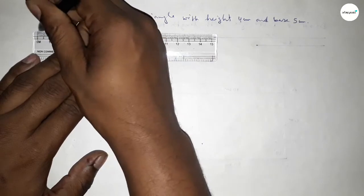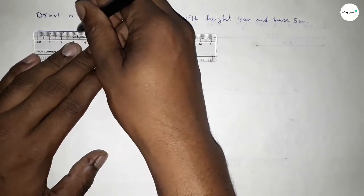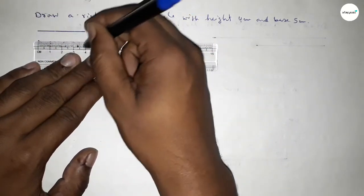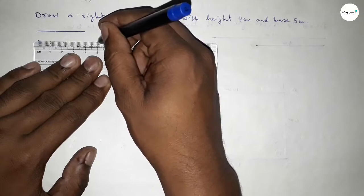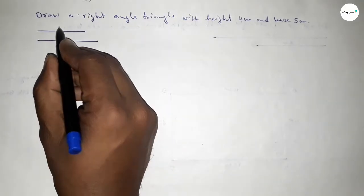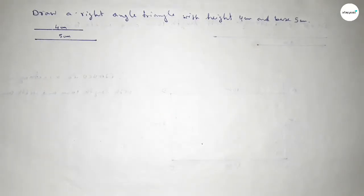First of all, we have to draw here a line of length 4 centimeters, so this is 4, and drawing another line of length 5 centimeters, so this is 5. So this side is 4 centimeters and this side is 5 centimeters.